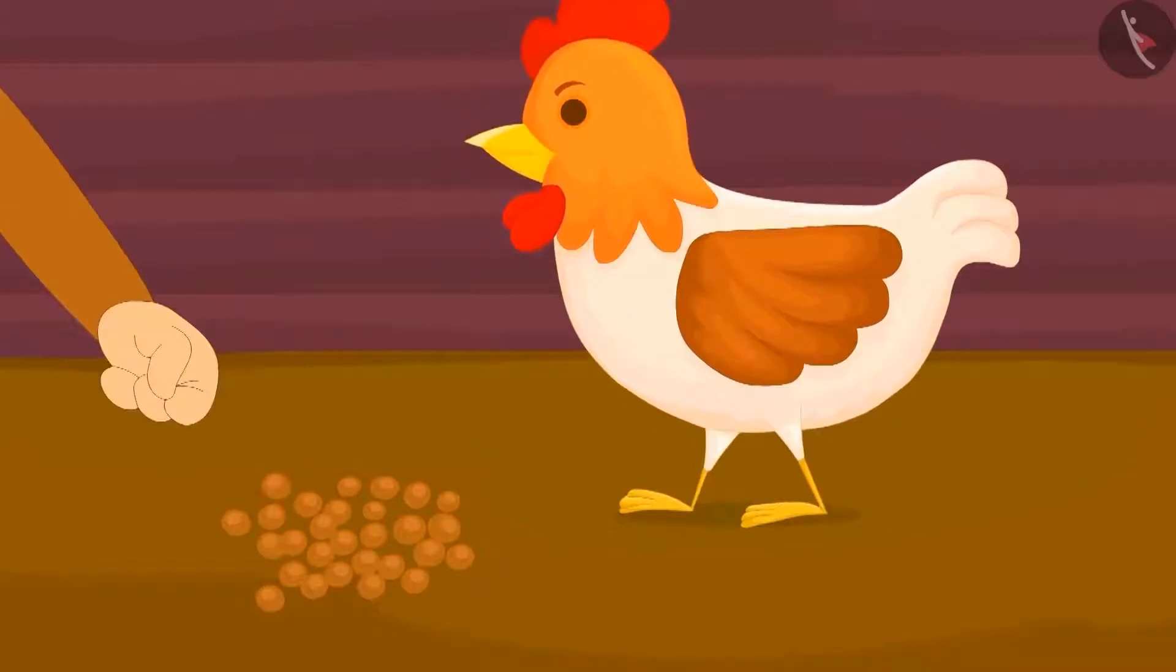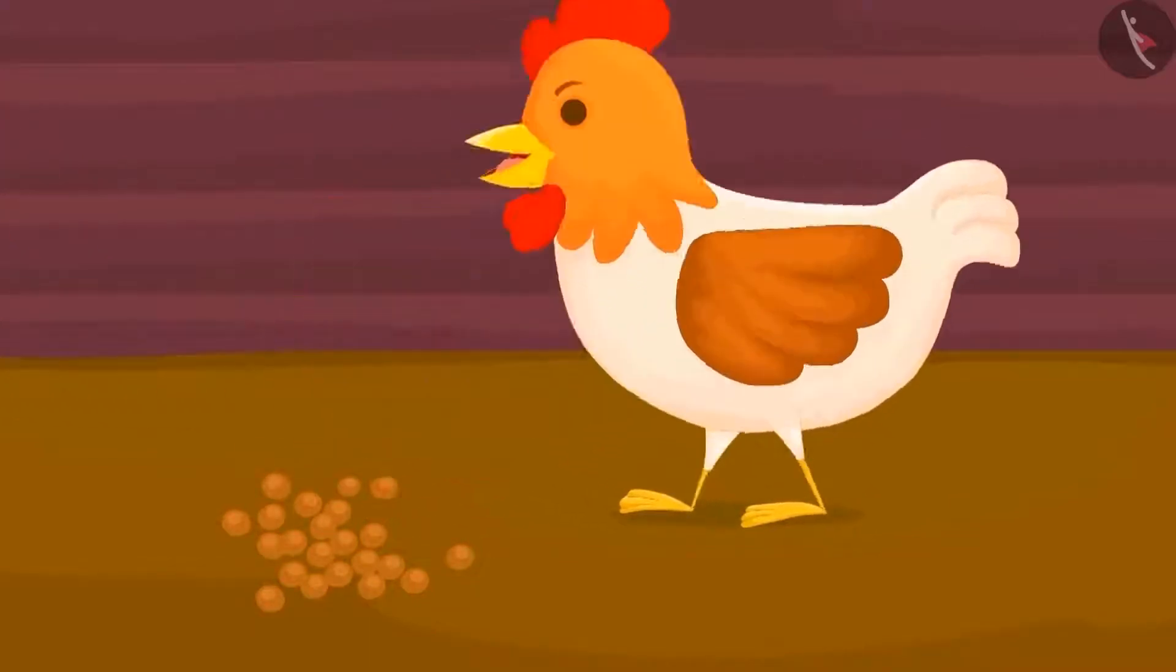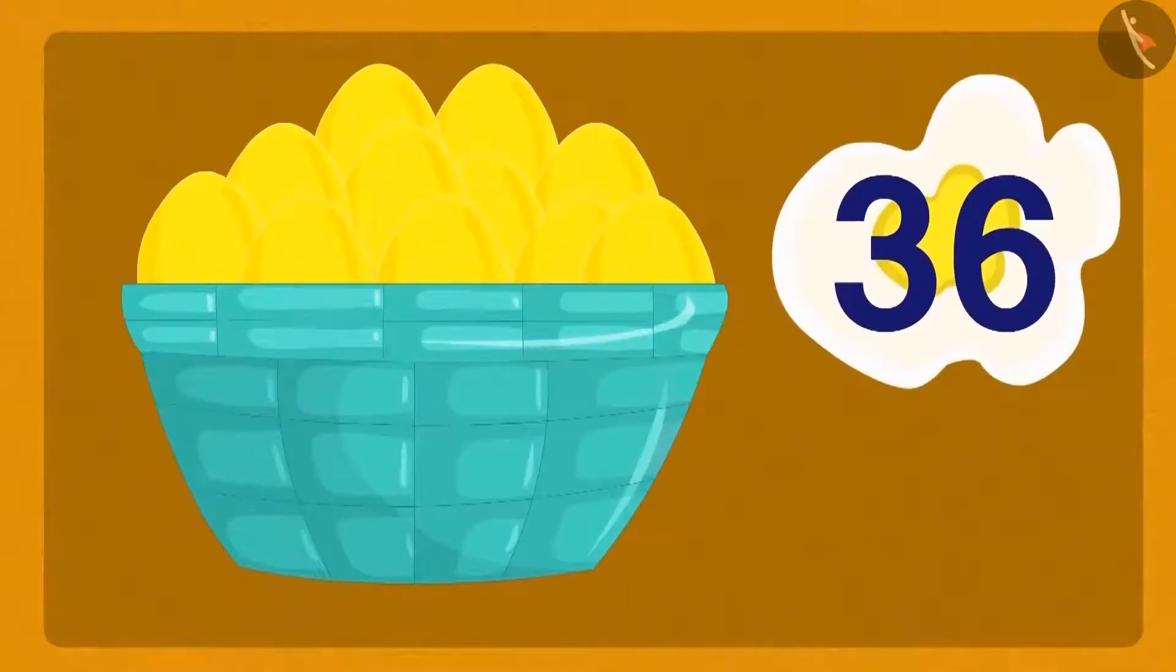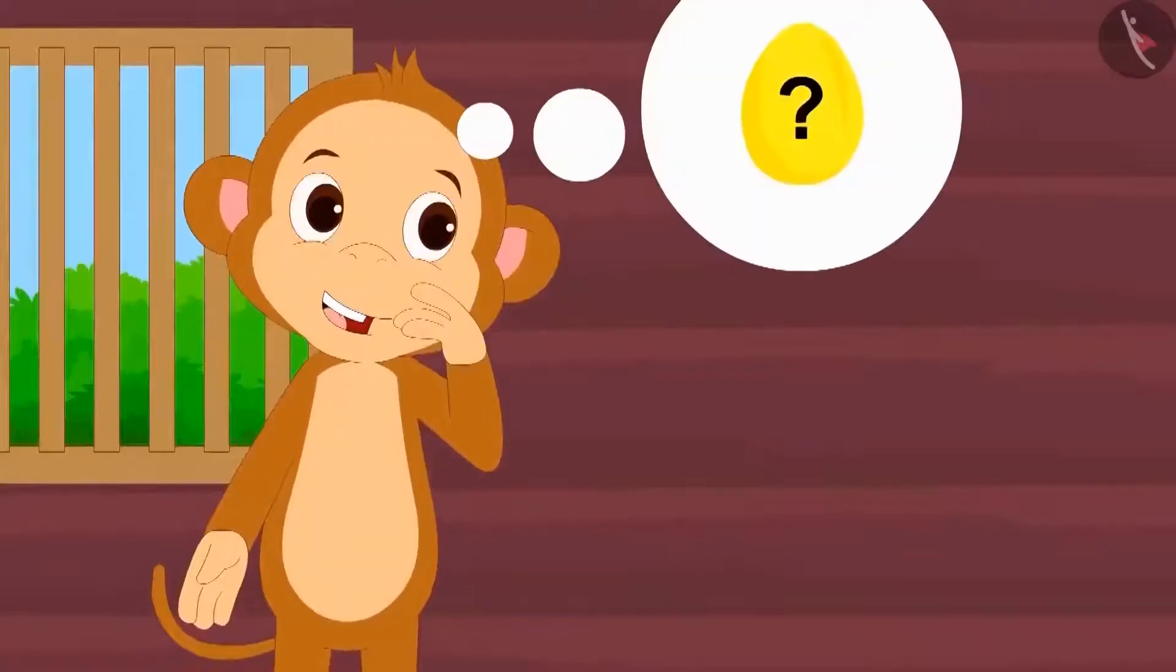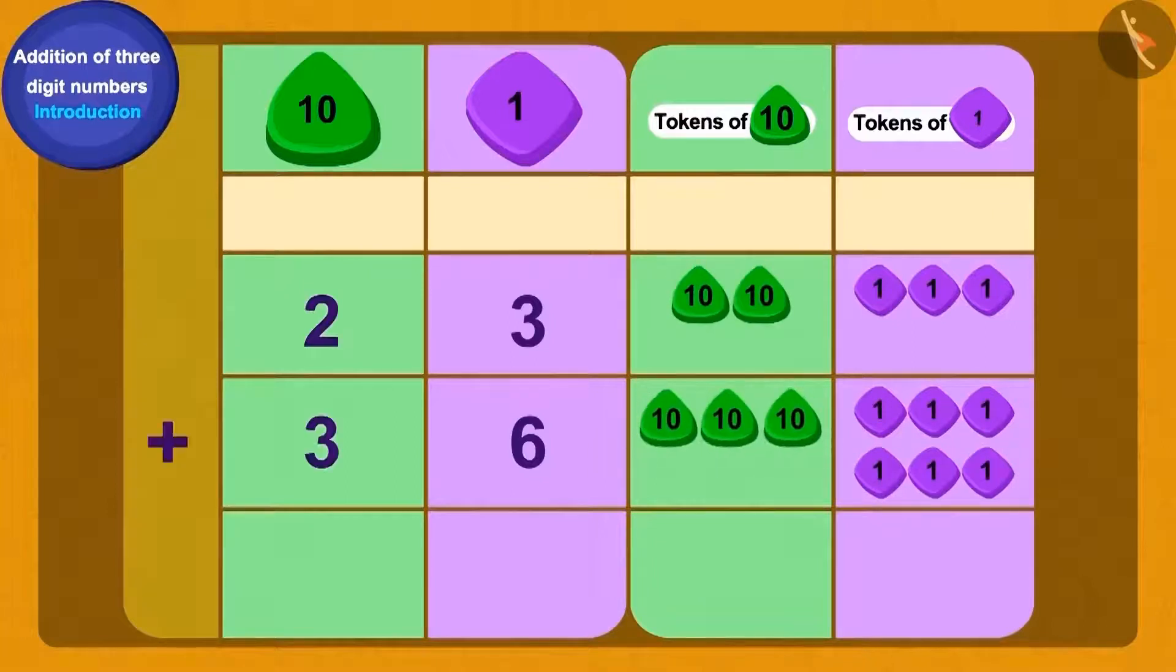Baban fed the hen daily for a week and in a week, the hen laid another 36 eggs. Baban is thinking, how many gold eggs he has now? Let us help him. To find the total number of gold eggs, we will add 36 to 23.